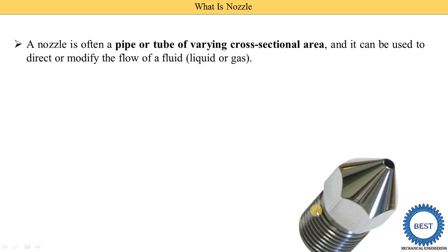The threaded part is fitted with the tube and this part is the nozzle. As you can see, the cross-sectional area of the nozzle is reduced from the inlet to the outlet, meaning the cross-sectional area is reduced towards the outlet — it has a varying cross-sectional area.